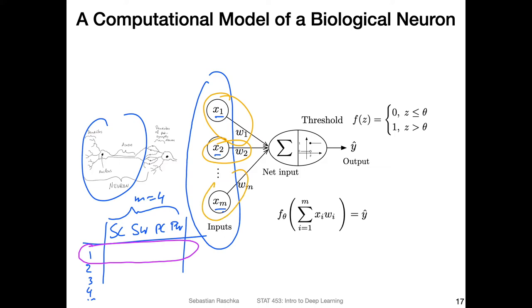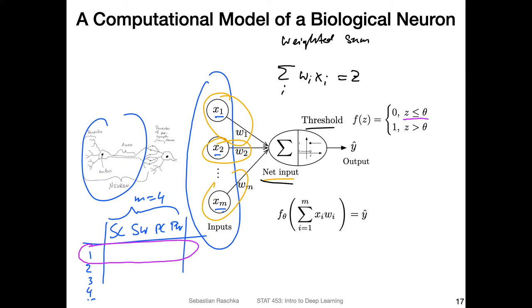Each feature value gets multiplied by a weight, so each x goes together with a weight. They are multiplied to compute the so-called net input — the weighted sum — computed as the sum of w_i times x_i, which we usually denote with the letter z. This net input is then passed to a threshold function, which returns a class label of either zero or one depending on the value of z.